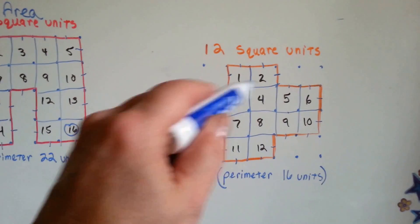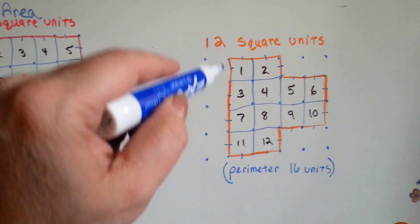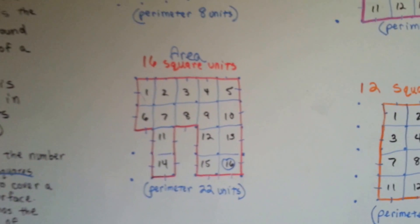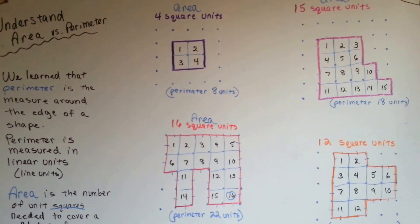So the area is the number of the inside squares, and the perimeter is the number of lines going around the edge like a fence. That's the difference between area and perimeter.